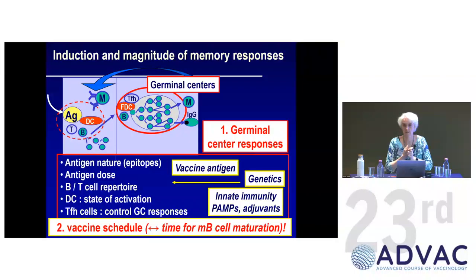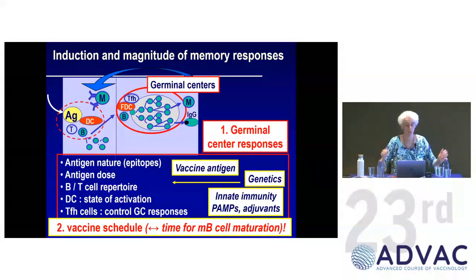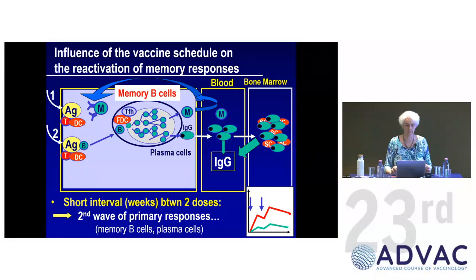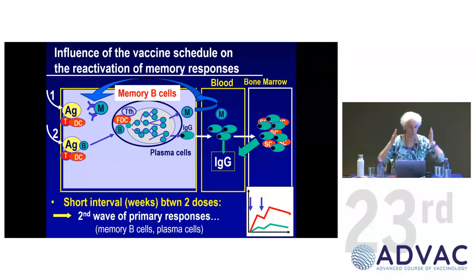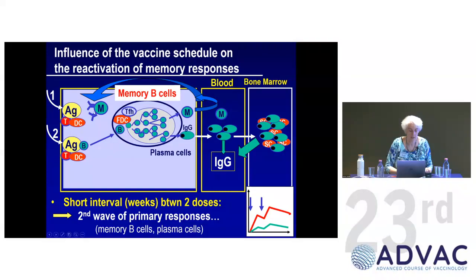There is a second factor: time. Memory takes time. The vaccine schedule — the time given for memory cells to mature — impacts their capacity to make more and better quality antibodies. If you give two doses at a short interval, say one month, you get a primary wave and then again a second primary response, because after one month you don't yet have many memory B cells sitting there after the first dose.